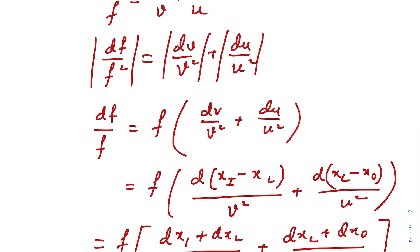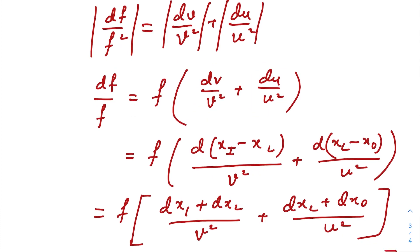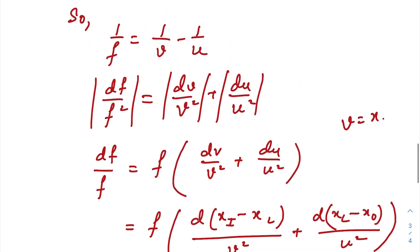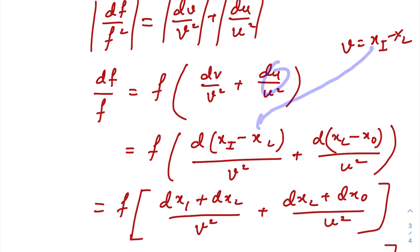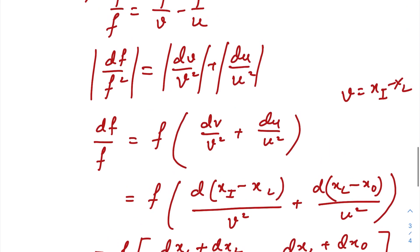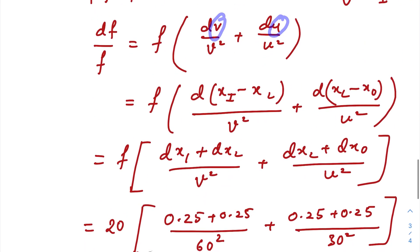As we have seen that v was equal to x_i minus x_l, right? So just put that here. And u was x_l minus x_o. So while finding out the values of u and v, we need to take two readings.